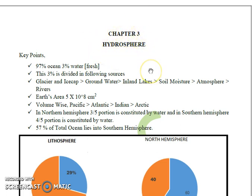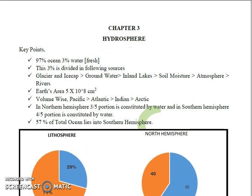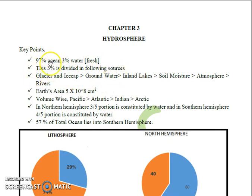As all of you know, 97% of the water on Earth is oceanic water or saline water. 3% of the total water is freshwater. Out of this 3% freshwater, the maximum water lies in glaciers and ice caps.